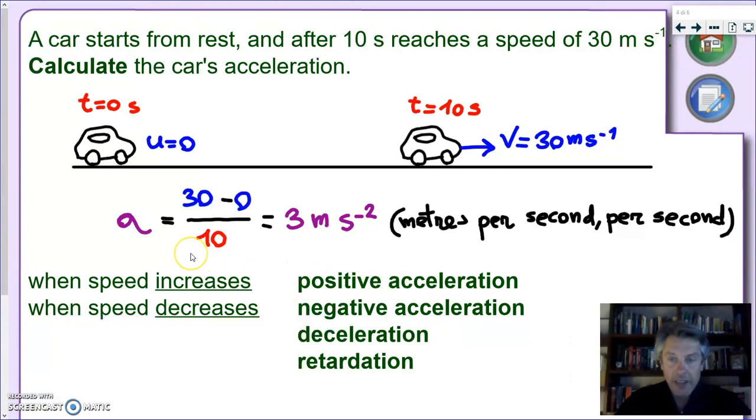On the other hand, we will have cases when the car is decreasing its speed. So the value of acceleration will be negative. So in that case when speed decreases we'll say that the acceleration is negative. Or there are two words you can find in the textbook. One of them is deceleration, and the other one is retardation. All three of them, they mean the same thing. A speed that is decreasing.